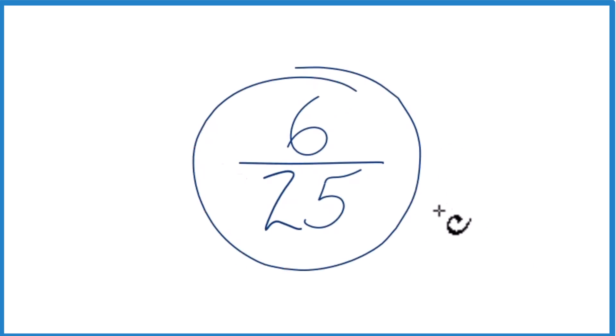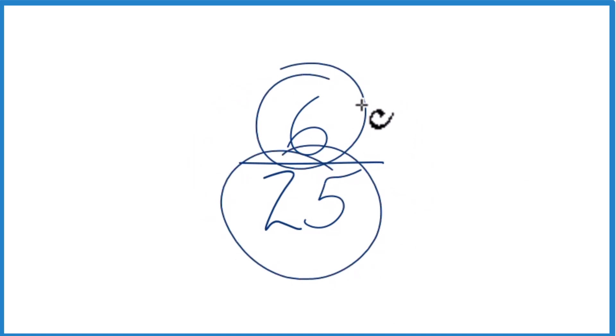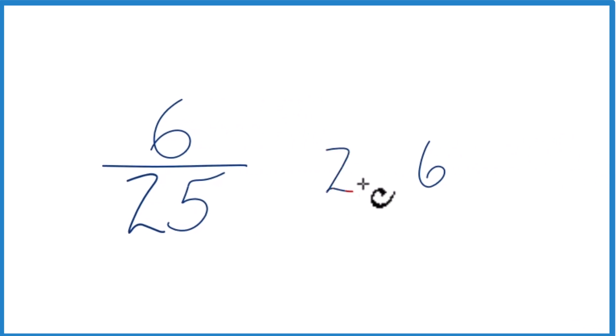Let's write the fraction 6/25 as a decimal. Here's how you do it. 6 is smaller than 25, so when we divide 6 by 25, we'll get a number less than 1. We'll get a decimal. So let's take 6 and see how many times 25 goes into 6.